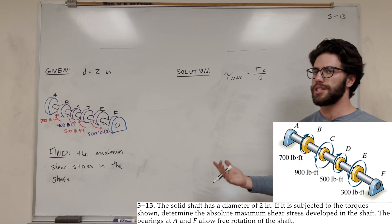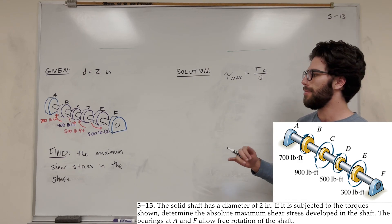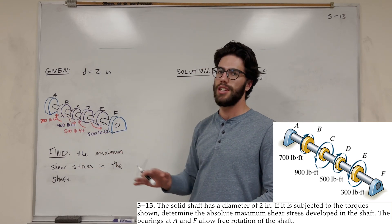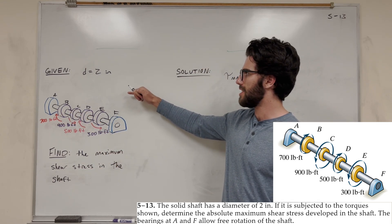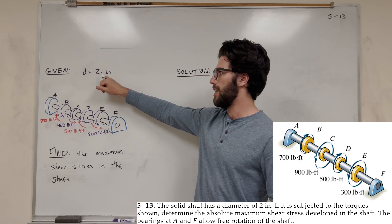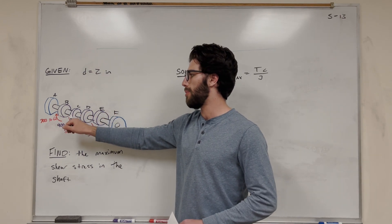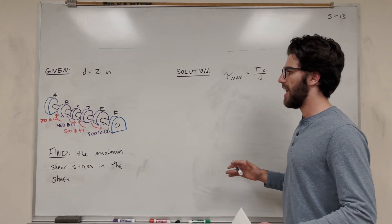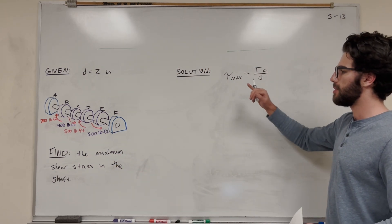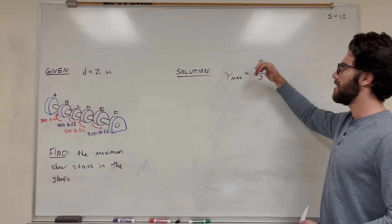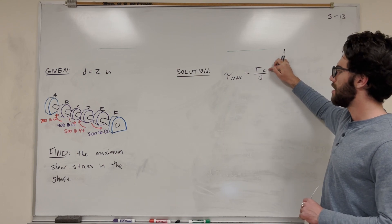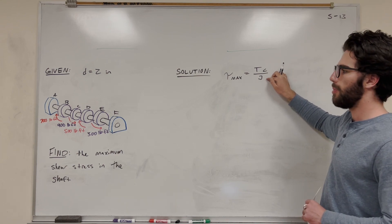We just solved 5.112, so basically we're going to do the same thing, but this time our goal is to find the maximum shear stress found anywhere in the shaft. We have a diameter of 2 inches and all these four moments acting on the shaft. We're going to find anywhere in the shaft where the maximum shear stress is. The equation we're using is shear stress max equals the torque in that segment times the radius over the polar moment of inertia.